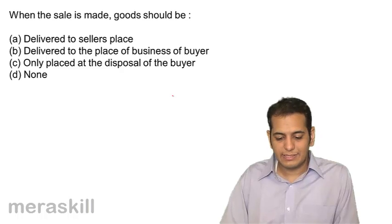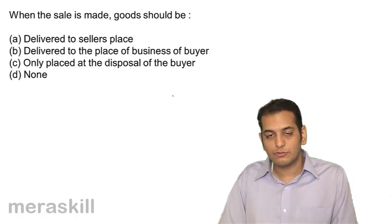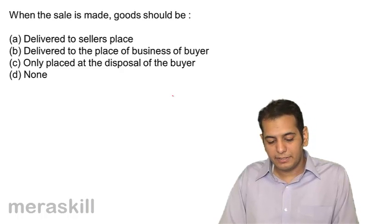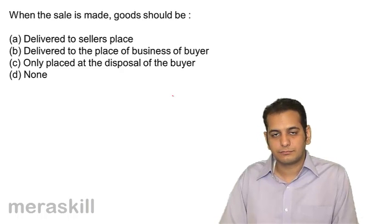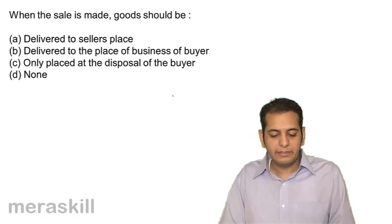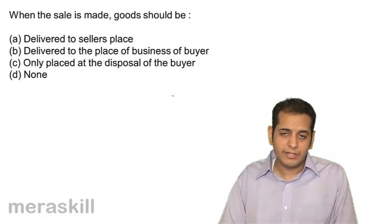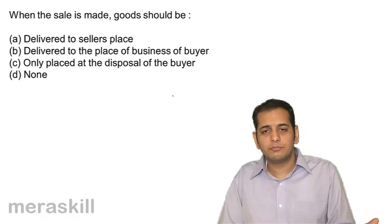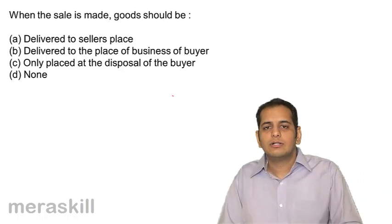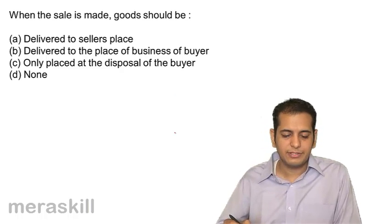First question: when the sale is made, goods should be (a) delivered to the seller's place, (b) delivered to the place of business of buyer, (c) only placed at the disposal of the buyer, (d) none. The answer is (c) — the goods should be placed before the buyer for his disposal.